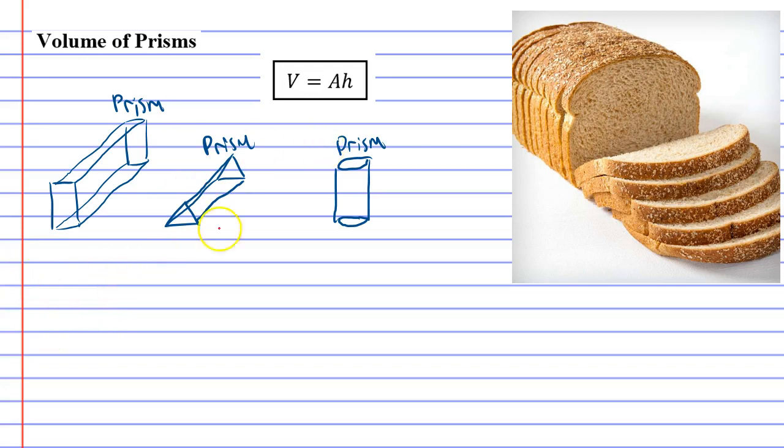Now, when we find the volume, all you need to do is find the area of the base or the top. Either one's the same. So you find the area of this base, and you multiply it by the height, and that will find you the volume of your prism.